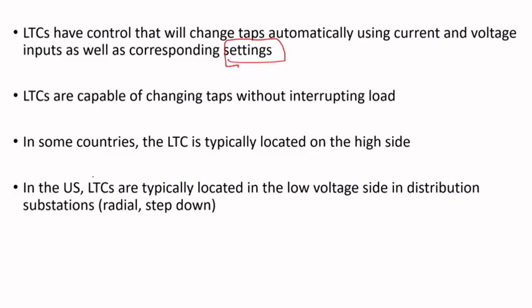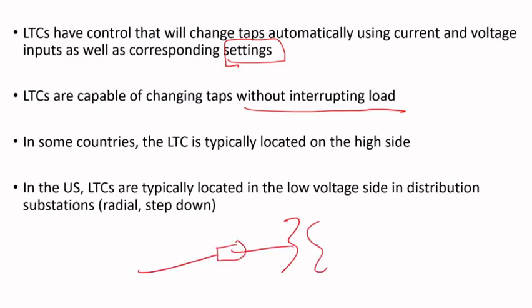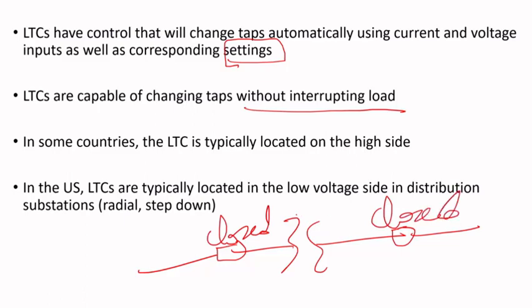Unlike the de-energized tap changer, LTCs are capable of changing taps without interrupting load. The tap changer has sensors and controls that will change the taps based on programmed settings without dropping load. In other words, with the transformer breakers closed — current flowing, voltage present, transformer energized — the tap changer will still change taps as designed.